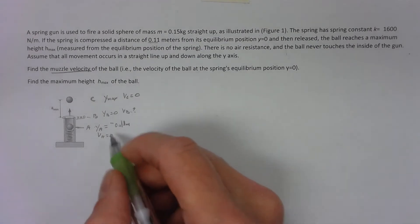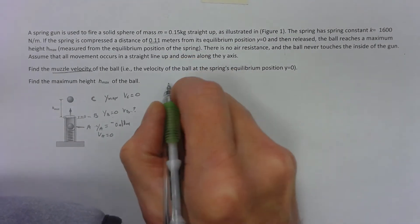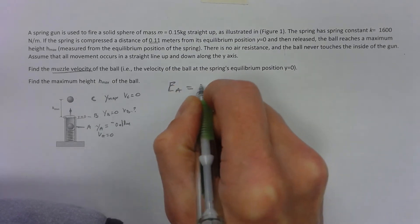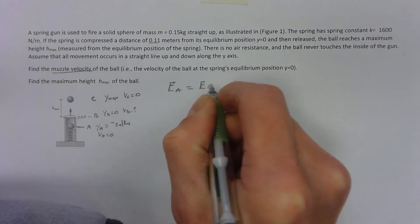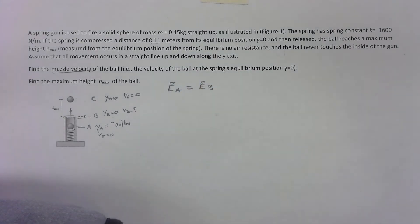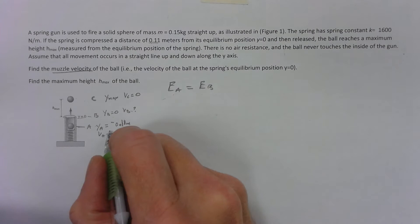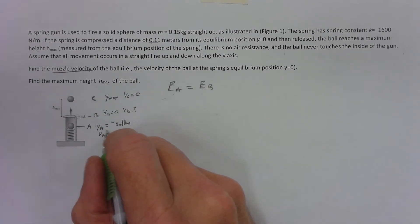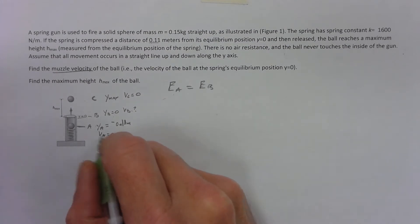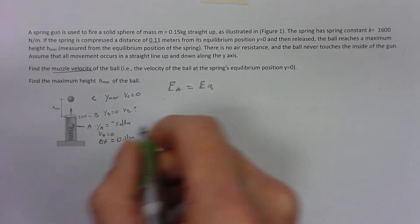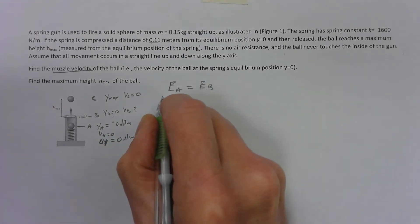Since the springs and gravity are conservative forces, we can say that all that energy at a is going to equal all that energy at b. There's no work being done. What kind of energy do I have? I've got gravitational potential because I got a height, no kinetic, but I also have spring energy. The delta x of the spring is 0.11 meters.